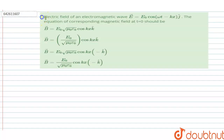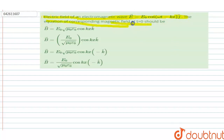Hello, welcome to DoubtNet. In this question, the electric field of an electromagnetic wave is given as E = E0 cos(ωt − kx) ĵ. The equation of the corresponding magnetic field at t = 0 should be, and we have four options.